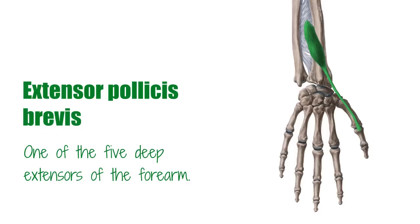The extensor pollicis longus lies on the medial side of the abductor pollicis longus and is found on the dorsal side of the forearm.